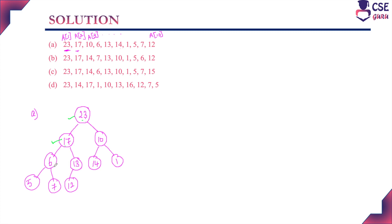However, node 6 has children 5 and 7. Since 7 is greater than 6, this node does not possess the max heap property. Also, node 10 has left child 14, which is greater than 10 — this also violates the max heap property. Therefore, option A is wrong.